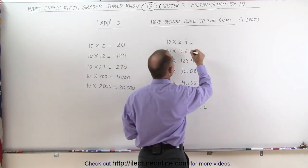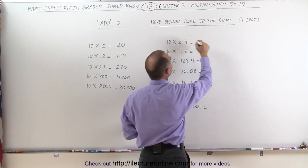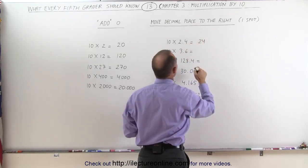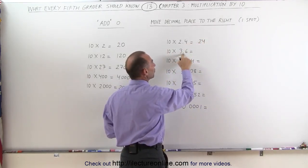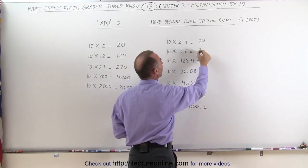10 times 2.4, move the decimal place over one, and you get 24. 10 times 3.6, move the decimal place over one, you get 36.